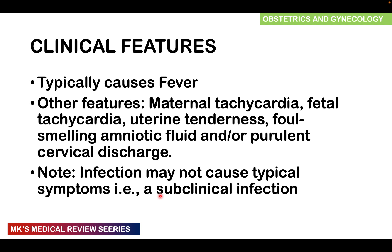How does intra-amniotic infection present? Typically, being an infection, there are features of inflammation. There will be a fever — I'll discuss the specific temperature thresholds. Other features include maternal tachycardia, fetal tachycardia, uterine tenderness, foul-smelling amniotic fluid, and sometimes a purulent cervical discharge. Remember that the infection may not always cause these typical symptoms — you may get what is known as a subclinical infection, which may not have these characteristic symptoms.